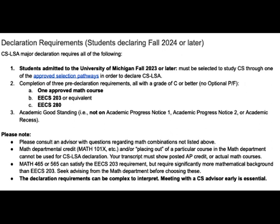In order to declare, the following must be completed: the three pre-declaration requirement courses that include one calculus math course, EECS 203 or equivalent, and EECS 280. Students must also achieve a C or better across these pre-declaration courses. Exceptions to this may include transfer credit, which will show up as a T grade, or AP credit. And lastly, your student record should be clear of any academic standing issues.